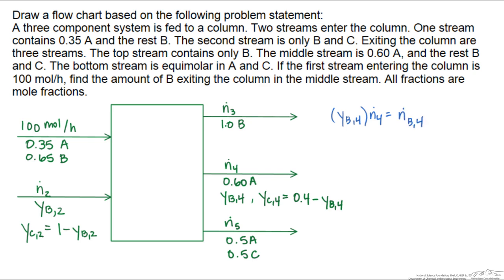Instead of writing overall flow rates, we can write specific component flow rates like I did right here. So for example we could write N A4 or N C4, realizing that the summation of those three component streams are going to equal the overall flow rate.